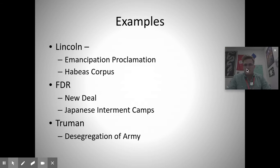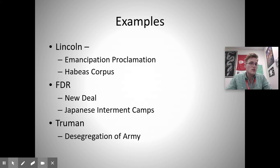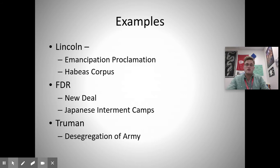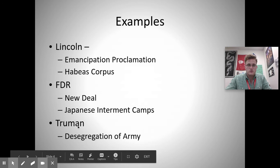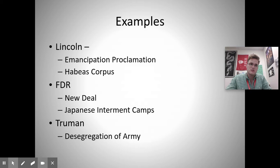Examples of executive orders include Lincoln's Emancipation Proclamation, which did not free all slaves — it freed enslaved people in Union-controlled territory, meaning the border states like West Virginia and Maryland. Lincoln also suspended the right of habeas corpus. For FDR, executive orders meant the New Deal, but he also issued the order creating internment camps where many Japanese Americans were held during World War II. Truman used an executive order to desegregate the army, allowing people of color to serve alongside white soldiers.